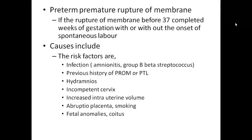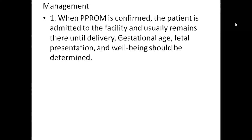Risk factors for PPROM include infections, previous history of PROM, preterm labor, cervical incompetence, increased intrauterine volume, placental abruption, smoking, fetal anomalies, and coitus. Management: when the patient is admitted for safety, gestational age, fetal presentation, and fetal well-being should be determined at any gestational age.